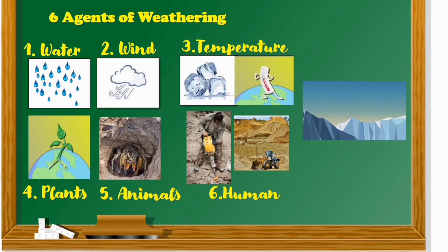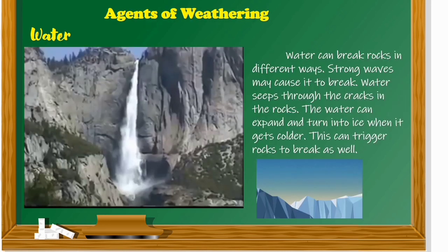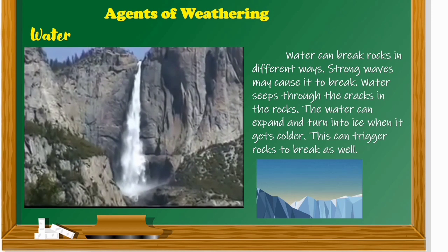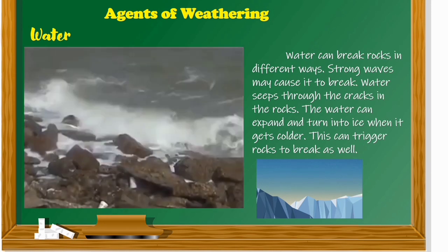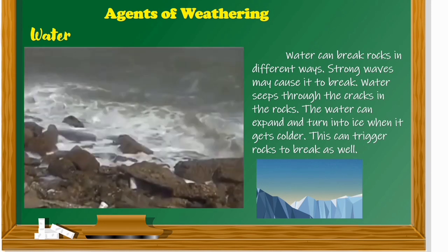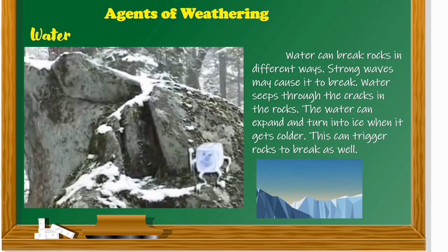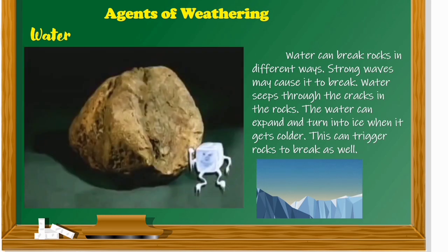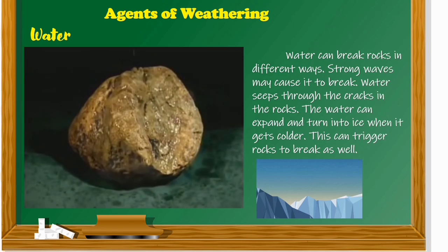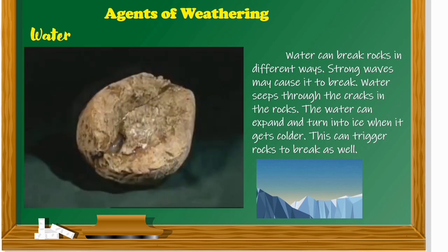There are six agents of weathering. First is water. Second, wind. Third, temperature. Fourth, plants. Fifth, animals. And sixth, human. Water can break rocks in different ways. Strong waves may cause them to break. Water seeps through the cracks in rocks. The water can expand and turn into ice when it gets colder, which can trigger rocks to break as well.